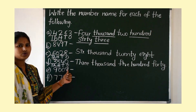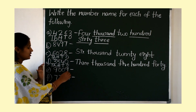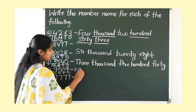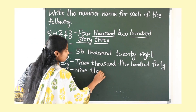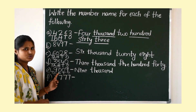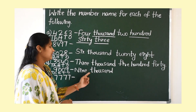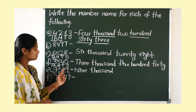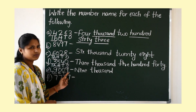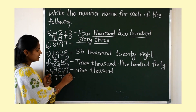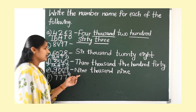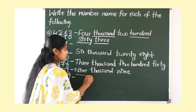Next: 9009. Write place values: 1's, 10's, 100's, and 1000's. How many 1000's? 9000. How many 100's? 0 hundreds — don't write the hundreds spelling. In the 10's place also we have 0, so no need to write the tens. Go to the 1's place: 9 ones make 9. So the number name is nine thousand nine.